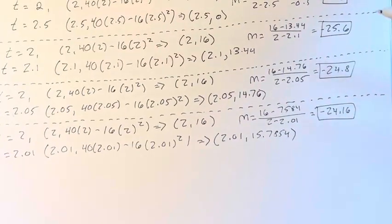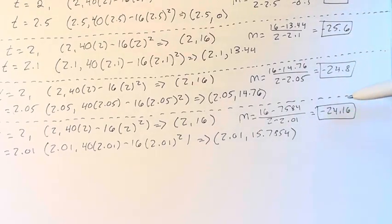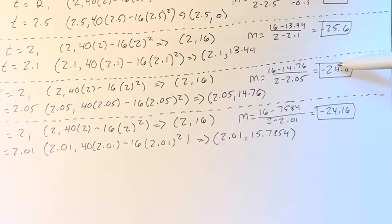And we can see here that these values approach a certain value. We start off at negative 32 and then we jump all the way down to negative 25.6. And then we jump a little less to negative 24.8. And then we jump a little less to negative 24.16.